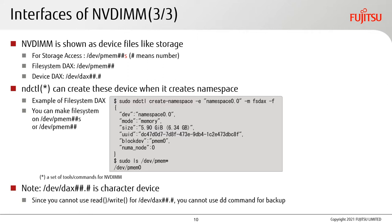Here is an example of file system DAX. You can make a file system on /dev/pmemNs or /dev/pmemN. Please note that /dev/daxN is a character device. Since you cannot use read or write for device DAX, you cannot use the dd command for backup.